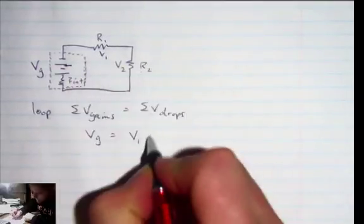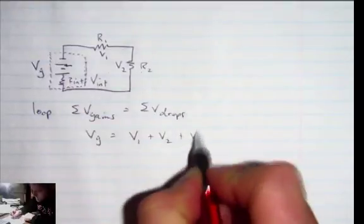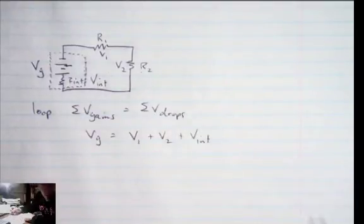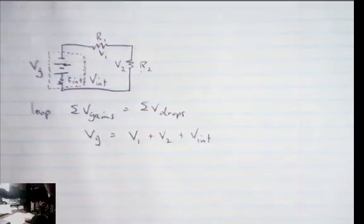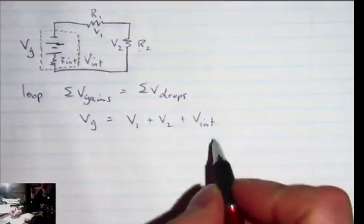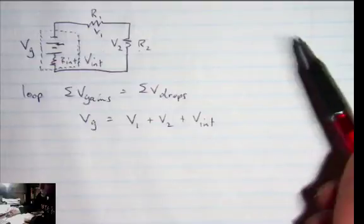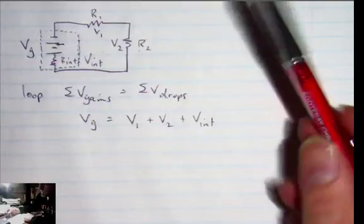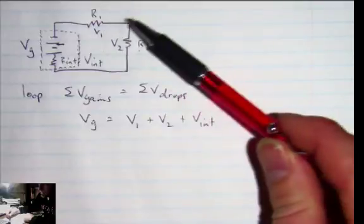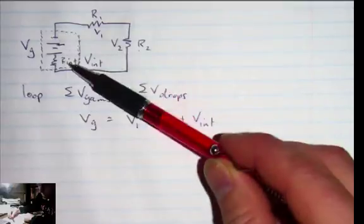And there's a V drop here which I'll call V1, there's a V drop here V2, and there's a V drop here which I'll call V drop internal. So we have three drops and one gain. Now if I want to talk about a terminal voltage, I'm interested in talking about the voltage or potential that is left over after everything that happens inside of the battery has been considered.